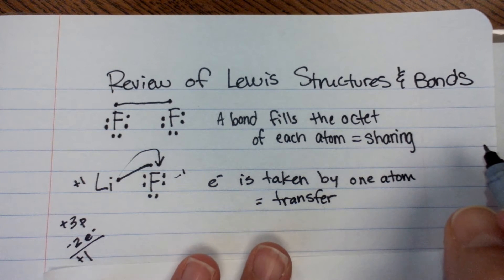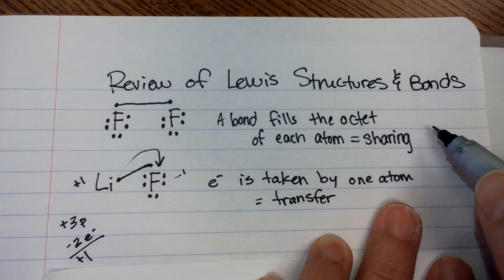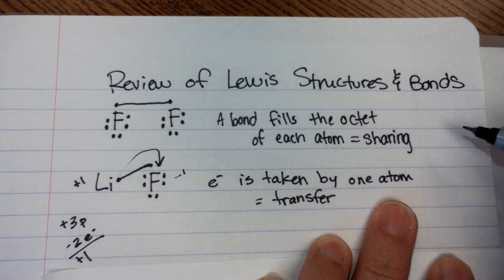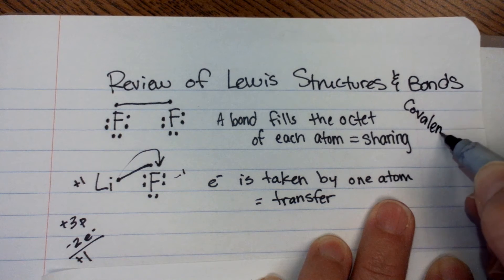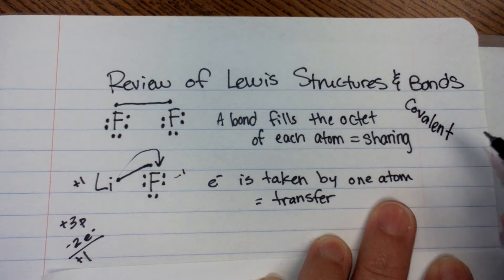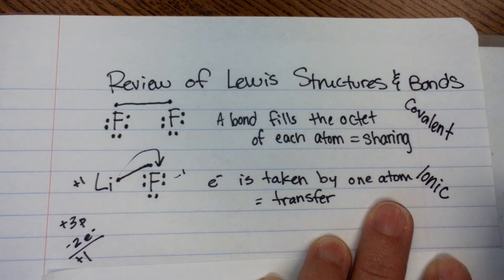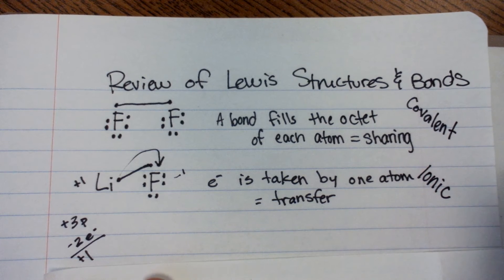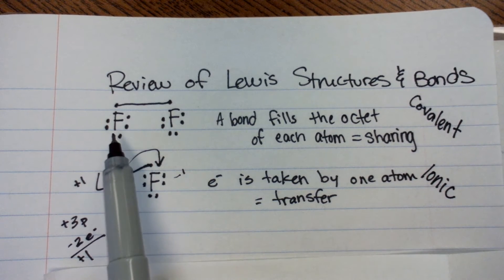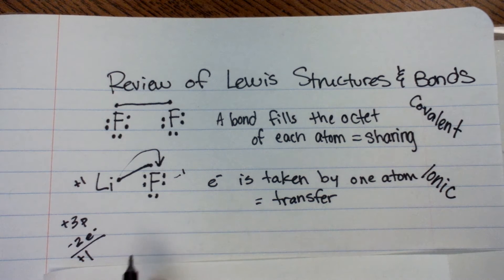So, up here we were sharing. Down here, electron is taken. Are they both still bonds? Yeah, absolutely. Do they both still happen? Yes. So we're going to put a name on it. This is called covalent. We'll talk about those in depth later on. And this is called ionic.